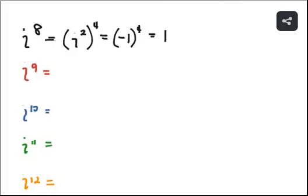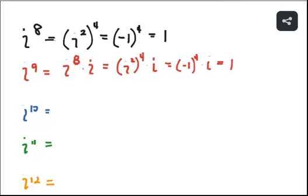Now let's find i⁹. Since 9 is odd, we write it using the highest even power: i⁹ = i⁸ · i. We can write i⁸ as (i²)⁴, and replacing i² with −1 gives (−1)⁴ = 1. So i⁹ = 1 · i = i.